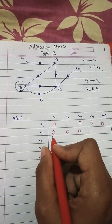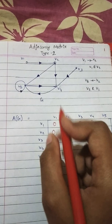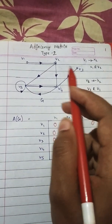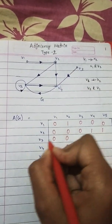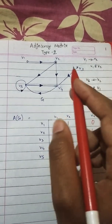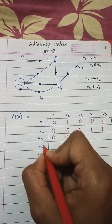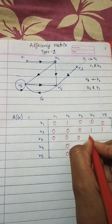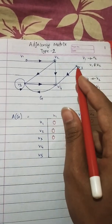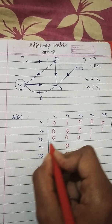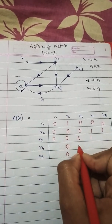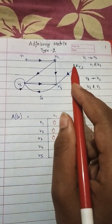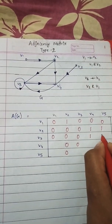V3 related to V1? No relation, 0. V3 related to V2? No relation, 0. V3 related to V3? No circular relation, 0. V3 related to V4? Yes, so 1. But V4 is not related to V3, therefore V4 to V3 is 0. V3 related to V5? No relation at all, 0.